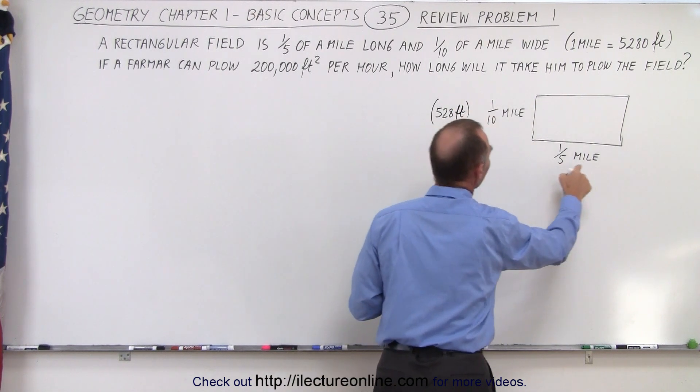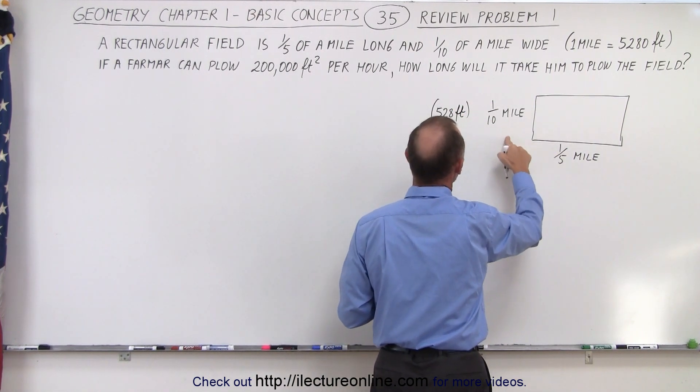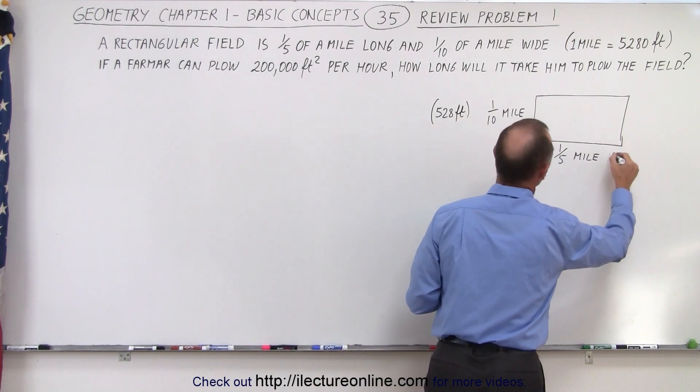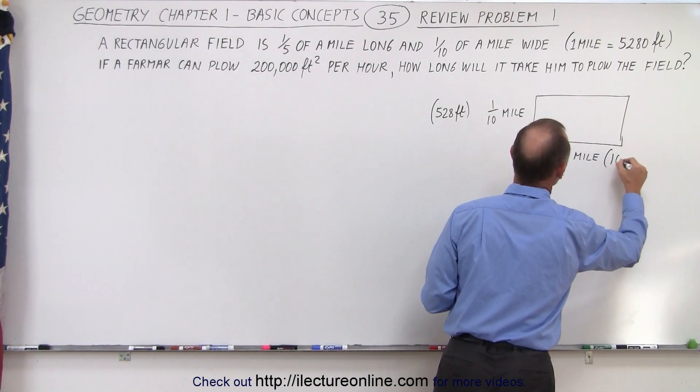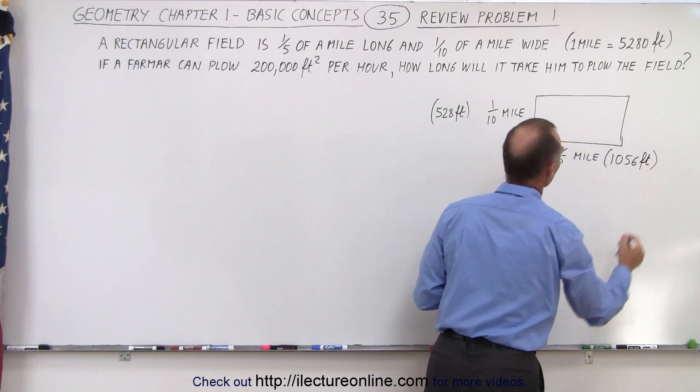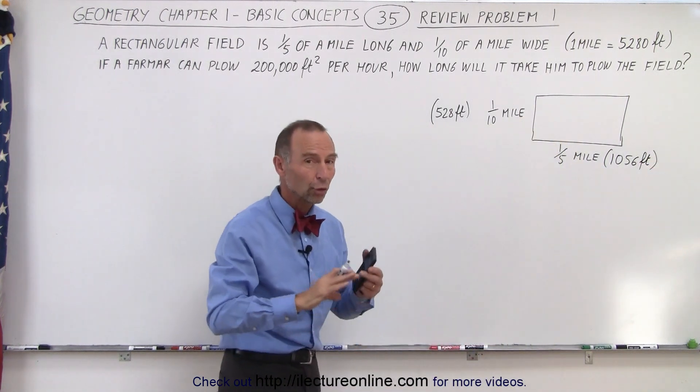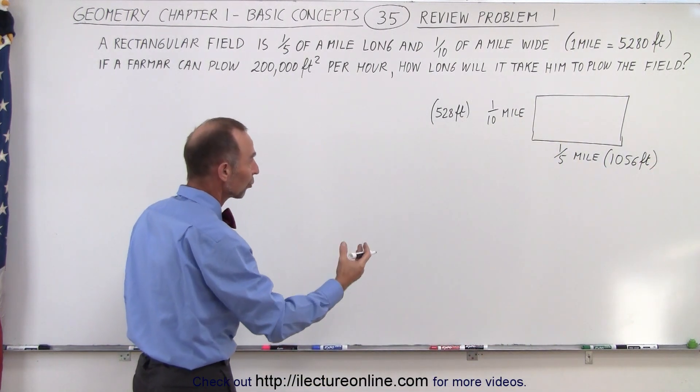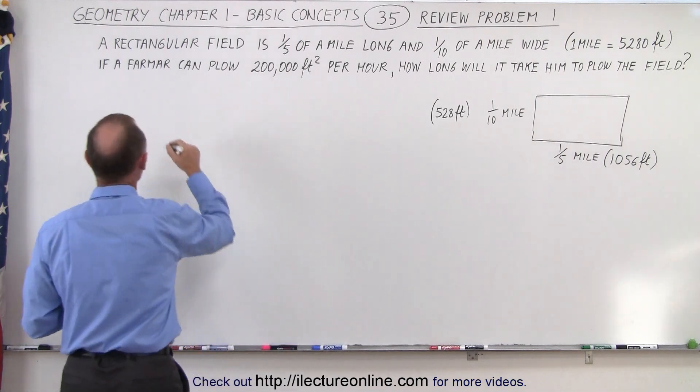And then one-fifth of a mile, well that would be twice as big. So that's double that number. So the length of that would be 1056 feet. So now what we can do is we can find the total area in feet or in square feet of that plot of land.